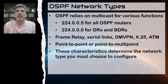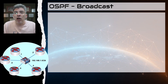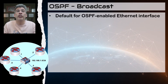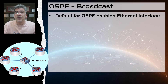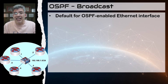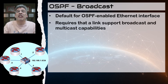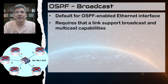Let's look at the specific network types that OSPF supports. Starting with the broadcast network type — this is likely the most common one you'll use in modern networks. The broadcast network type is the default for an OSPF-enabled Ethernet interface. Don't confuse the term 'broadcast' here with what OSPF actually does — OSPF uses multicast and/or unicast to send its messages; it never uses broadcasts. The term 'broadcast' refers to the capabilities of the network technology, requiring the link to support broadcast and, by extension, multicast communication.